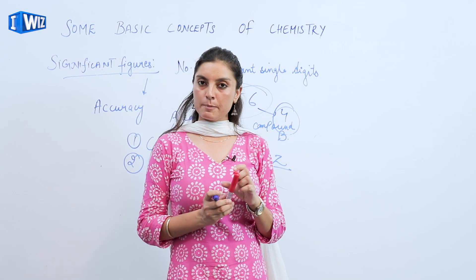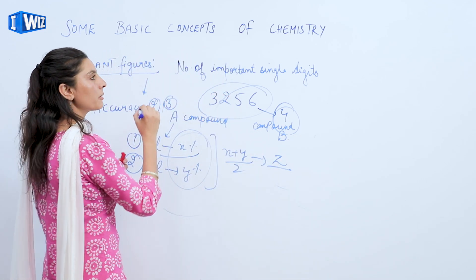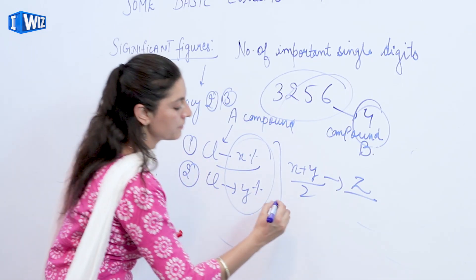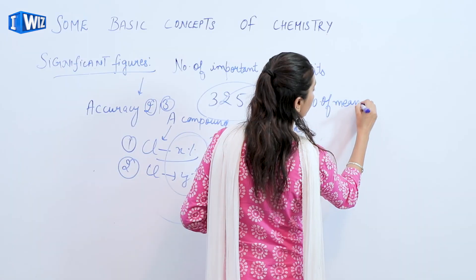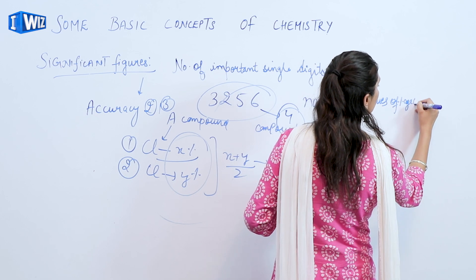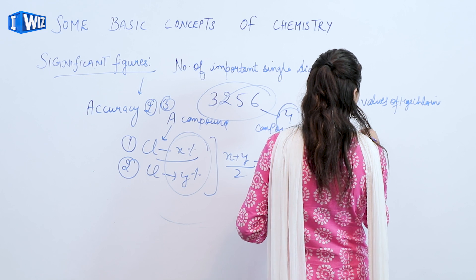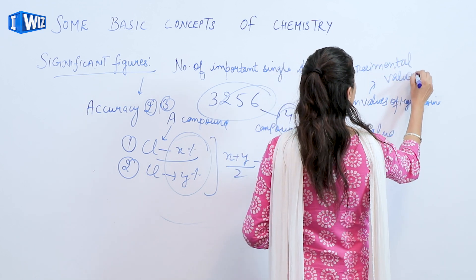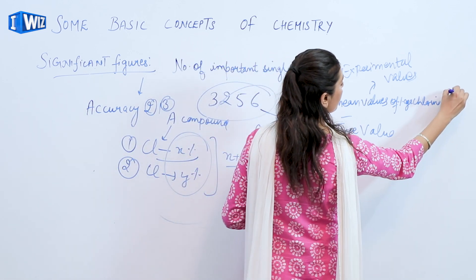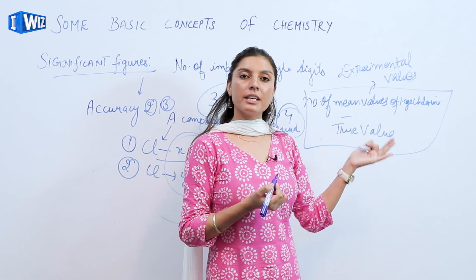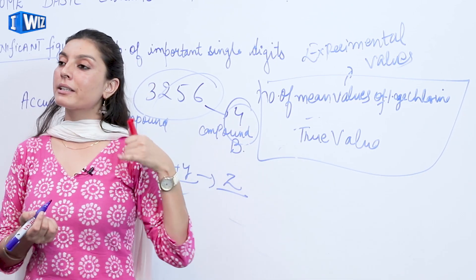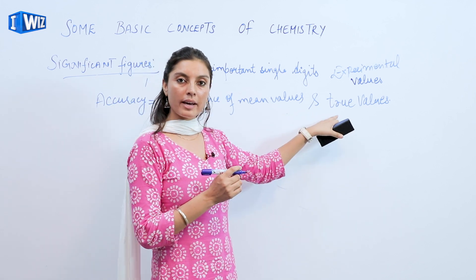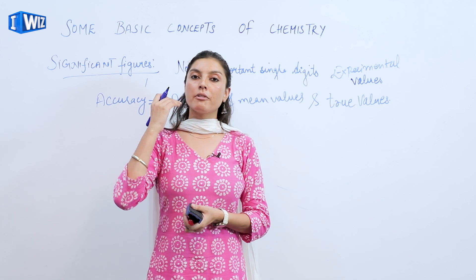Whenever we are performing a different number of experiments — either two or three times — the accuracy of finding the percent of chlorine in that compound is equivalent to the difference of the mean value of the percentage of chlorine and the true value. These values are obtained by performing the experiment, so they are called experimental values. Accuracy is equivalent to the difference of the mean value of any given element in a compound and the true value of that element in that compound.